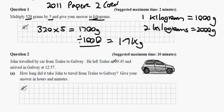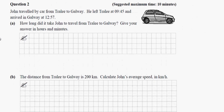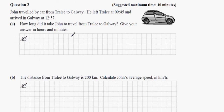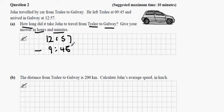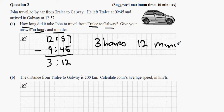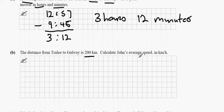Next: John travelled by car from Tralee to Galway. He left Tralee at 9:45 and arrived in Galway at 12:57. How long did it take? We calculate 12 hours 57 minutes minus 9 hours 45 minutes. 57 minus 45 is 12 minutes, and 12 minus 9 is 3 hours. So the answer is 3 hours and 12 minutes.